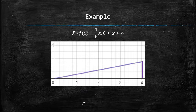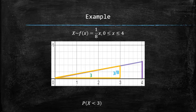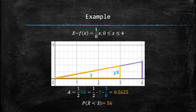To find the probability that x is less than 3, we will look for the area under the curve between 0 and 3. This region is a triangle with base 3 and height 3/8. The area can be found using the formula for the area of a right triangle and is equal to 0.5625 or 56.25%.